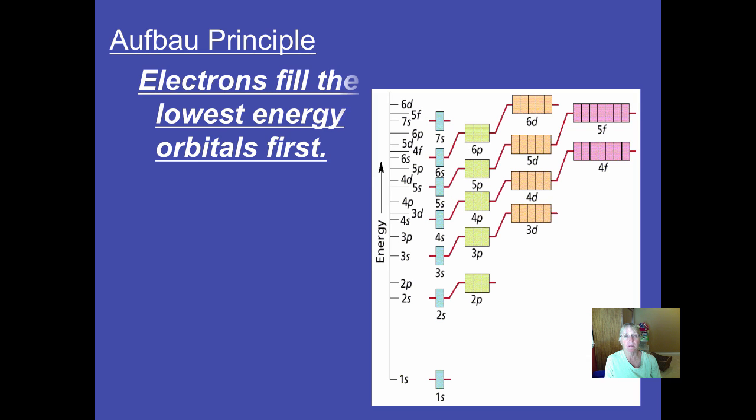So our Aufbau Principle says, electrons fill the lowest energy orbitals or sub-levels first. Start at the bottom and build up. You will have to know the name of the rules, describe the rule, and be able to draw pictures of the rules.